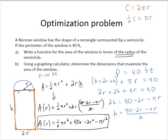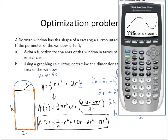Now, using a graphing calculator, determine the dimensions that maximize the area of the window. Let me go to my calculator and input my function, and I'll use x instead of r. ½πx² plus 40x minus 2x² minus πx².